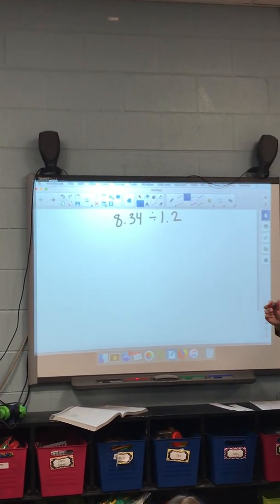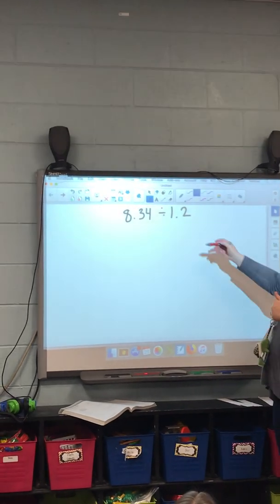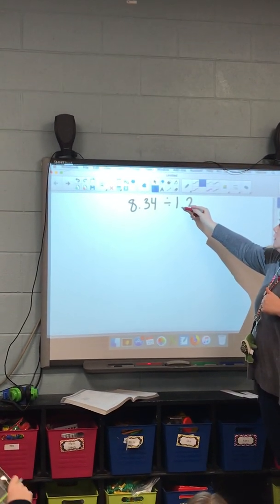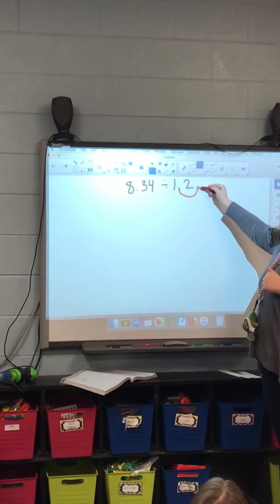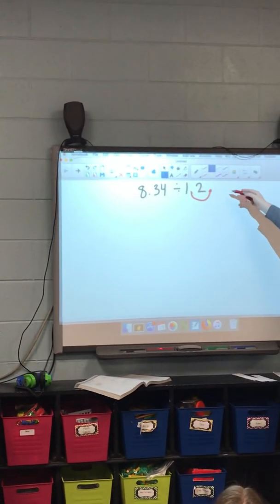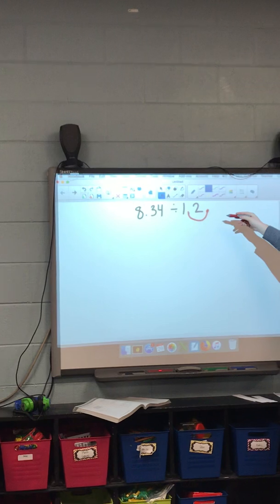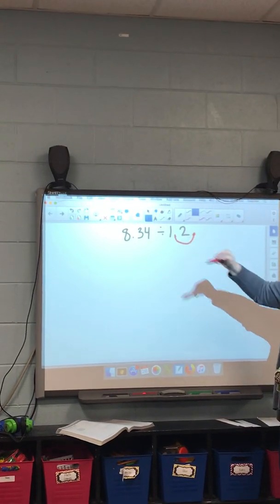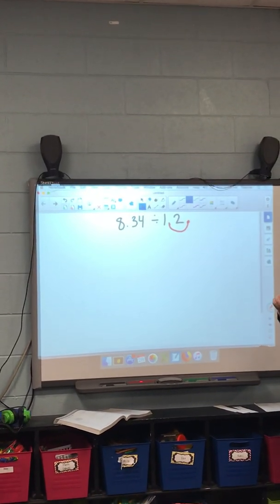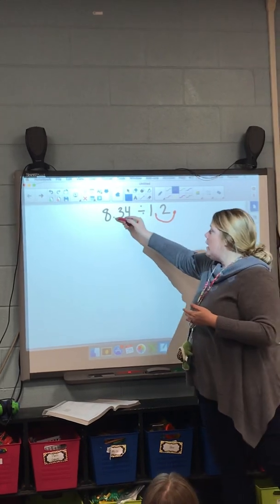They're going to shift, aren't they? So it's going to appear that the decimal is moving, right? If we move it one time to the right on this side, what do we have to do over here? Move it one time to the right on this side.